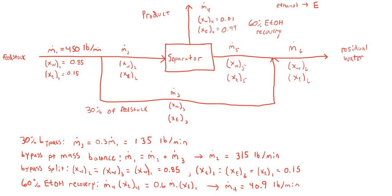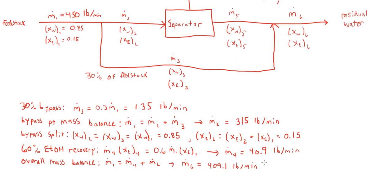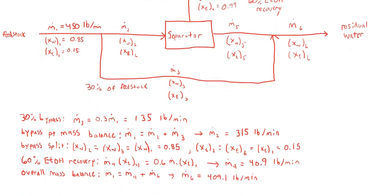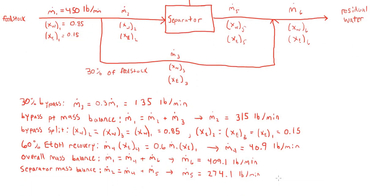Using mass balances, we can calculate both M.5 and M.6. To calculate M.6, we do a mass balance on the entire process: the feedstock is the one thing coming in, and the product stream and the residual water are the only things leaving. So M.1 equals M.4 plus M.6, giving M.6 equal to 409.1 pounds per minute. Then doing a mass balance around the separator, M.5 is equal to 274.1 pounds per minute.